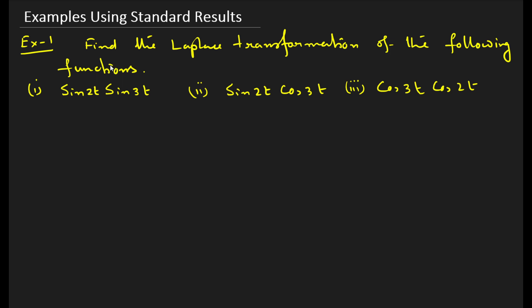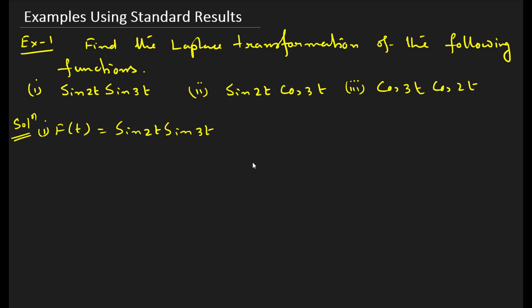We have to find the Laplace transformation for three different functions. In the first example, f(t) = sin(2t)·sin(3t). You cannot take the Laplace directly on both sides because there is no property that says the Laplace transform of f₁(t)·f₂(t) equals the Laplace transform of f₁(t) times the Laplace transform of f₂(t). Some students write it that way, but there is no rule like this.